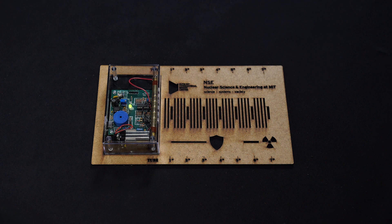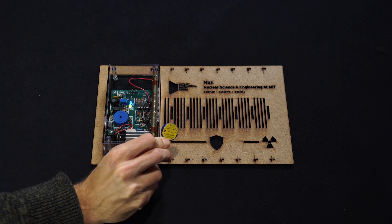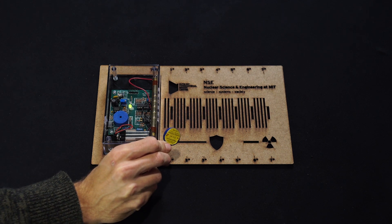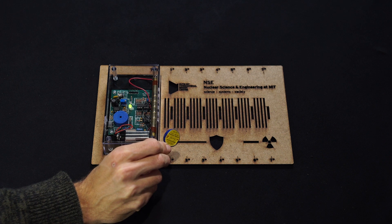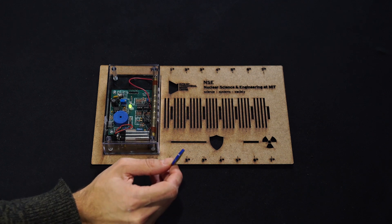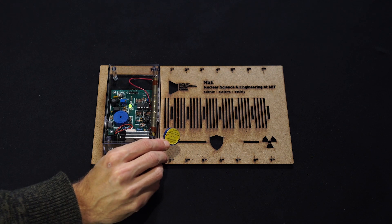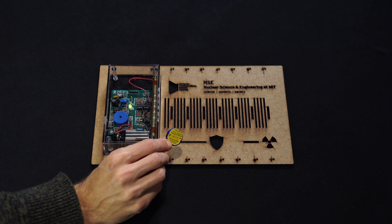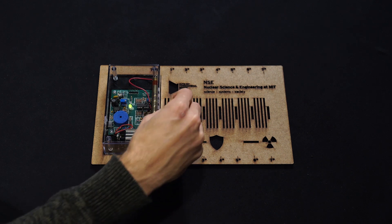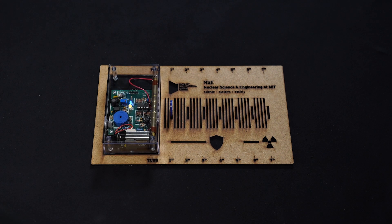By contrast, we have these little disks that we call check sources. These are sealed little bits of ionizing radiation. You can already hear the Geiger counter starting to respond. Both the light bulb and this disk are emitting photons or little waves of light, but the waves of light coming from here are much more energetic, and they have enough energy to ionize or rip electrons off of different molecules. So let's put it close to the Geiger tube.